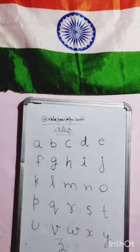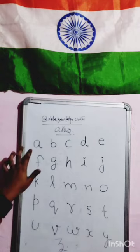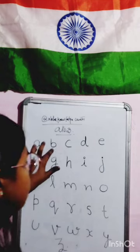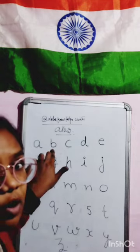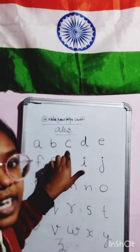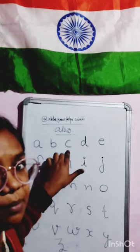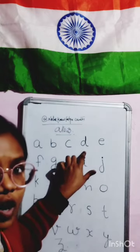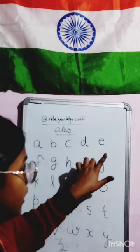So, these are for small kids. A for Apple, Apple means Saib. B for Ball, Ball means Gend. C for Cat, Cat means Billi. D for Dog, Dog means Kutta.